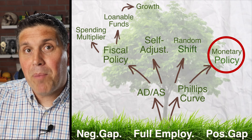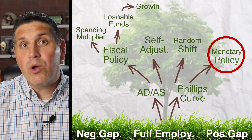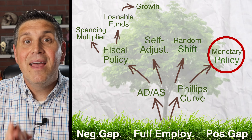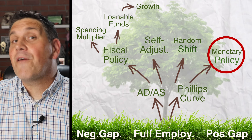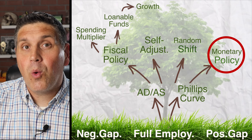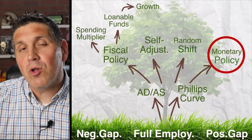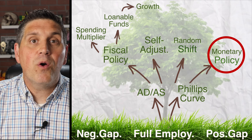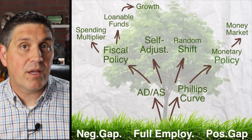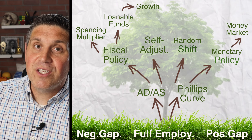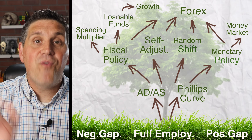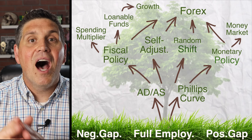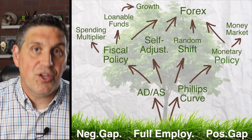If they ask you about monetary policy, be sure you can explain the shifters of money supply, especially open market operations. From there they can ask you questions about the money multiplier, but they usually don't — they focus on the money market graph.